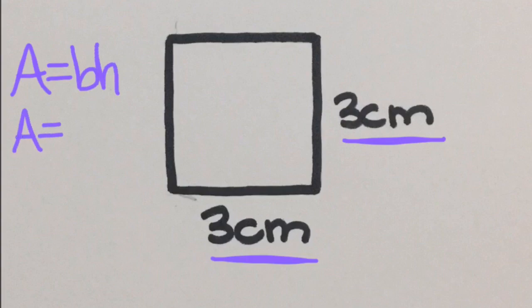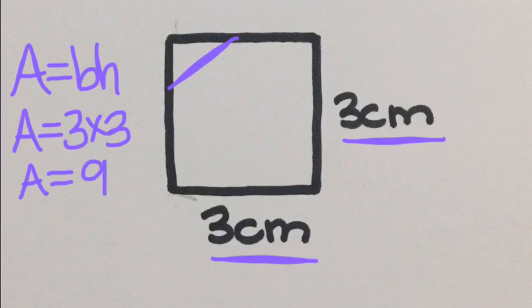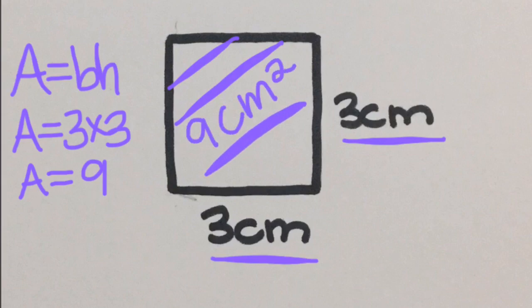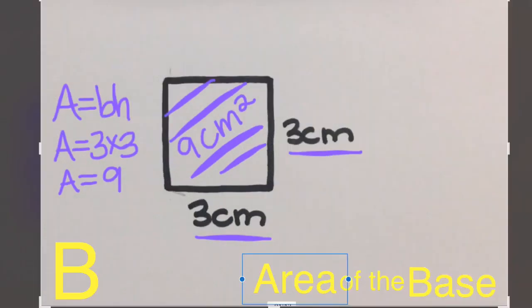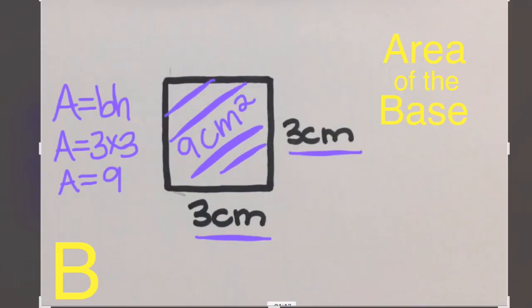So we can find the area of the base. Let's fill up just the base first. Area is three times three. And area is nine centimeters squared. Remember we have area, two dimensions, centimeters squared. So the whole base is nine centimeters squared. We call that the area of the base. We also use a capital B to represent the area of the base. You can think about this as being B times H or L times W.